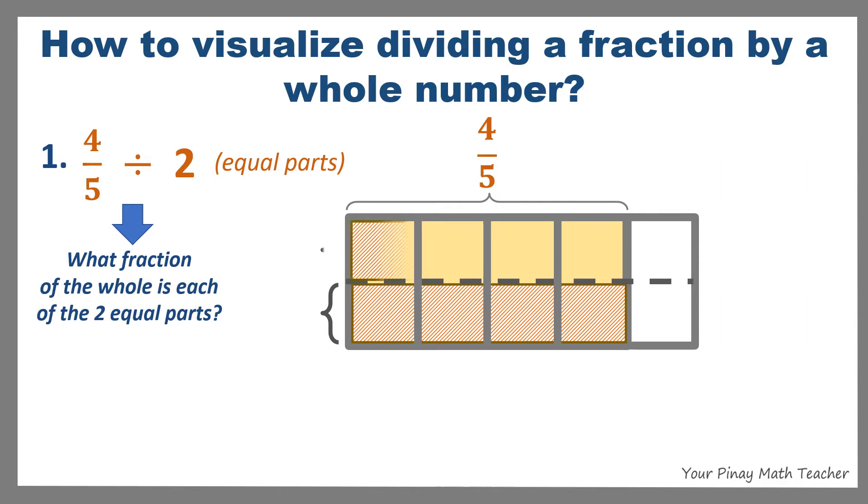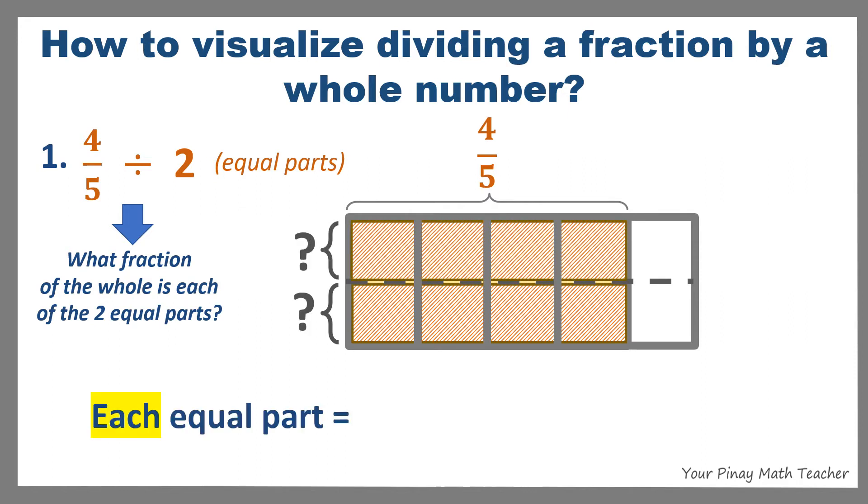Each equal part is equal to 1 out of 2, or 1 half, of the shaded part 4 fifths. By counting, 1 half of 4 fifths is equivalent to 4 boxes, or 4 equal parts out of 10 equal parts. Reducing 4 tenths by 2, we get a final answer of 2 fifths.